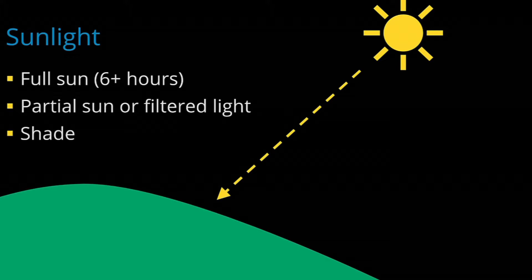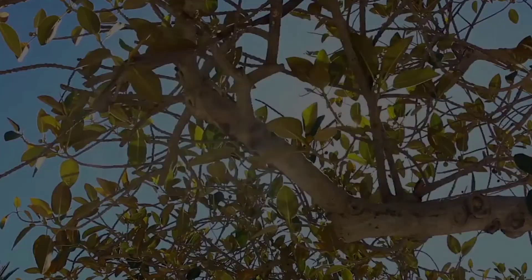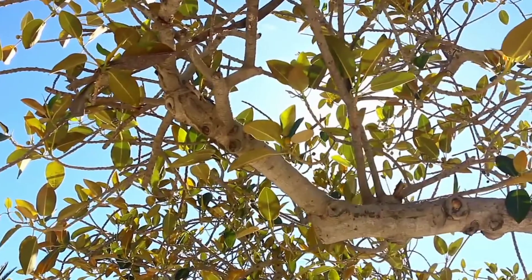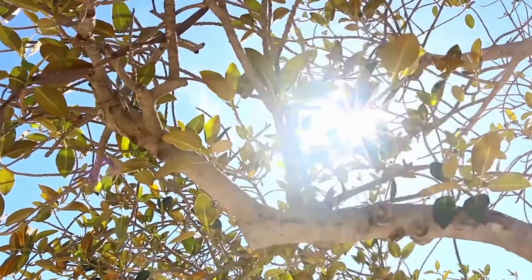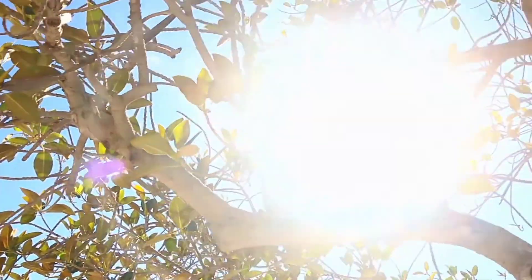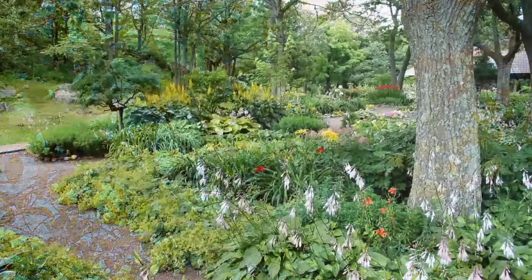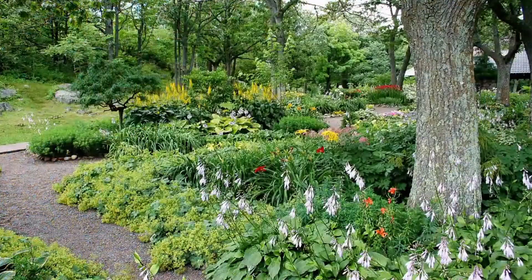Areas that are in partial sun get sun at some parts of the day, but not the many hours of sun that many plants require. Overhead trees can create filtered light or dappled shade where sunlight is able to pass through a thin canopy. Shaded areas can also grow amazing plants — it's just a matter of selecting plants that are suited to the amount of light that is available.